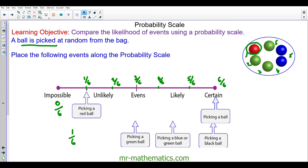Picking a green ball. Well, there are three green balls out of six in total, and this simplifies to make one half. So this would be evens.